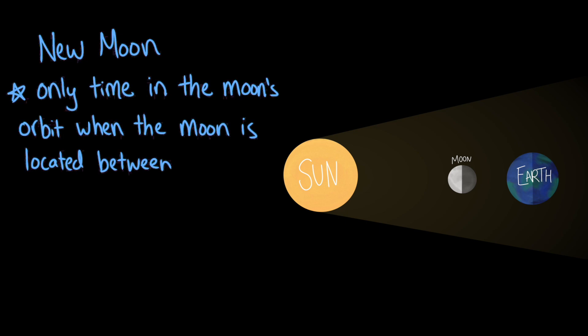Total solar eclipses, like all solar eclipses, happen only during a new moon, which is the only time in the moon's orbit where the moon is located between the sun and Earth.